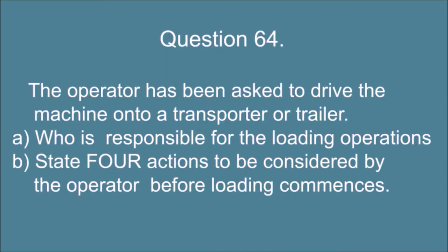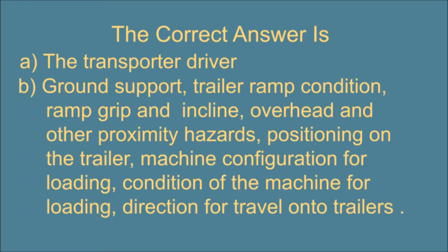Question 64. The operator has been asked to drive the machine onto a transporter or trailer. A) Who is responsible for the loading operations? B) State four actions to be considered by the operator before loading commences. The correct answer is: A) The transporter driver. B) Ground support, trailer ramp condition, ramp grip and incline, overhead and other proximity hazards, positioning on the trailer, machine configuration for loading, condition of the machine for loading, direction for travel onto trailers.